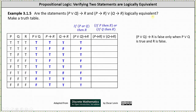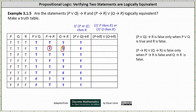Finally, if p then r or if q then r is false only when both if p then r and if q then r are false. Looking at those columns, both are false only in row two — which means row two is the only row where the disjunction is false. The last column is: true, false, true, true, true, true, true, true.